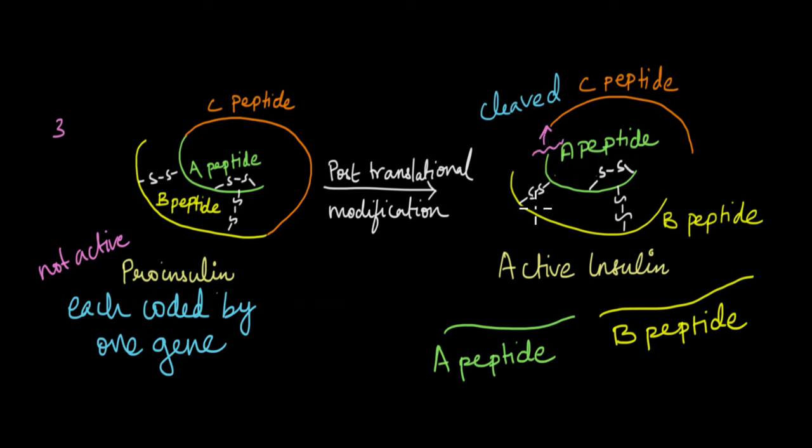But the A and the B peptides are joined together by disulfide bonds. You see these disulfide bonds here. The A and the B peptides are joined by disulfide bonds. So this is the active form of the insulin, which is involved in telling the cells to take up the glucose in the body. So it is made up of two peptide chains, A peptide and the B peptide chain.